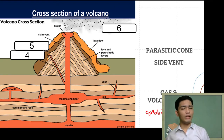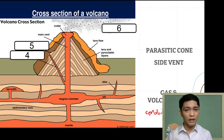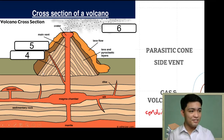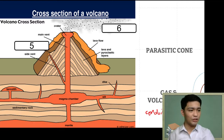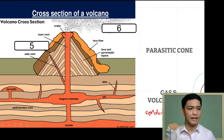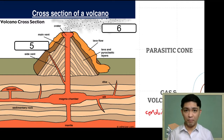The fourth part: aside from the main vent, magma can actually flow to other channels or pipes on the sides. This is what we refer to as the side vent. You can actually have multiple side vents on a volcano. The side vent is basically an opening on the side of a volcano through which volcanic material can also flow.